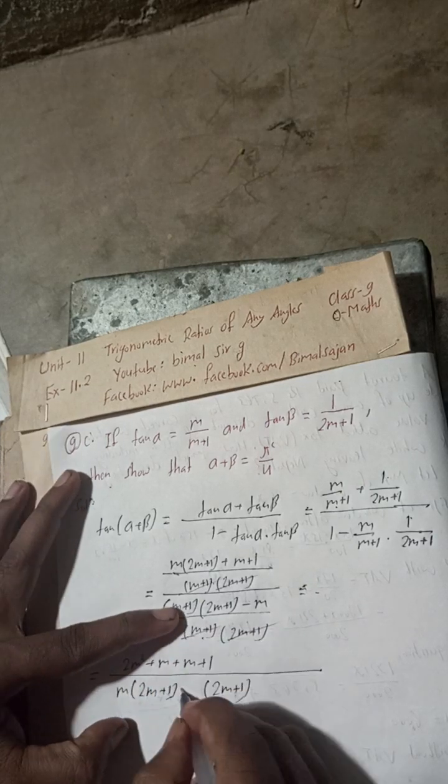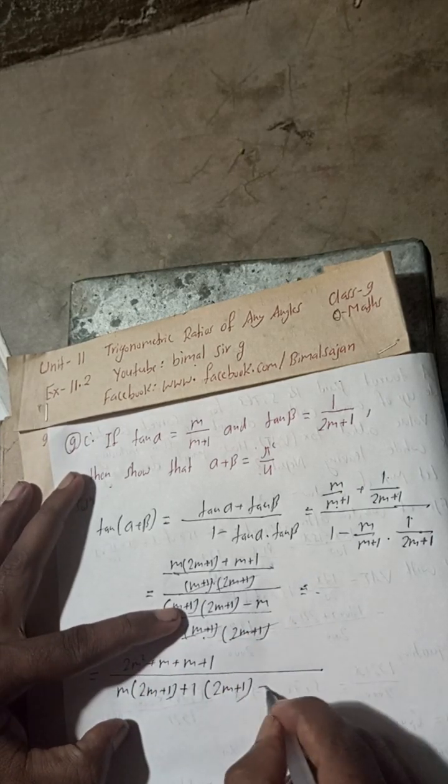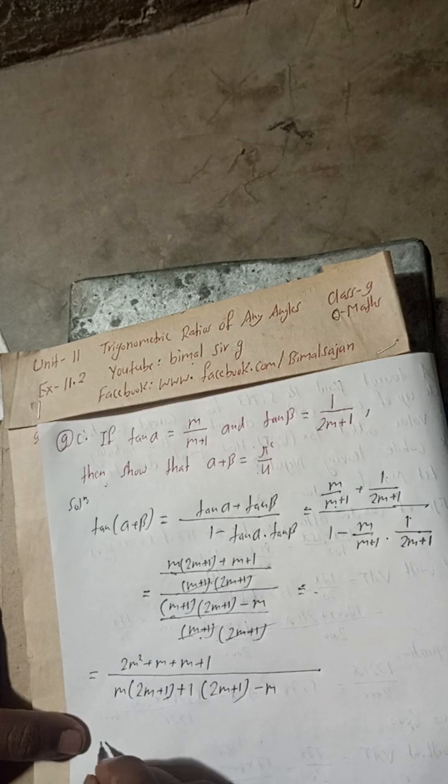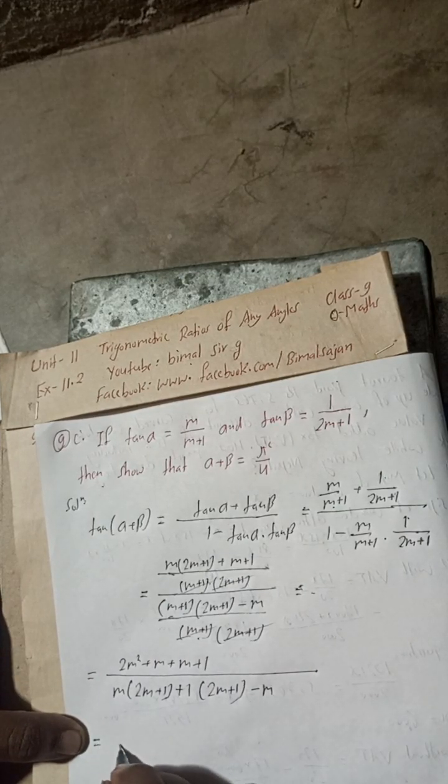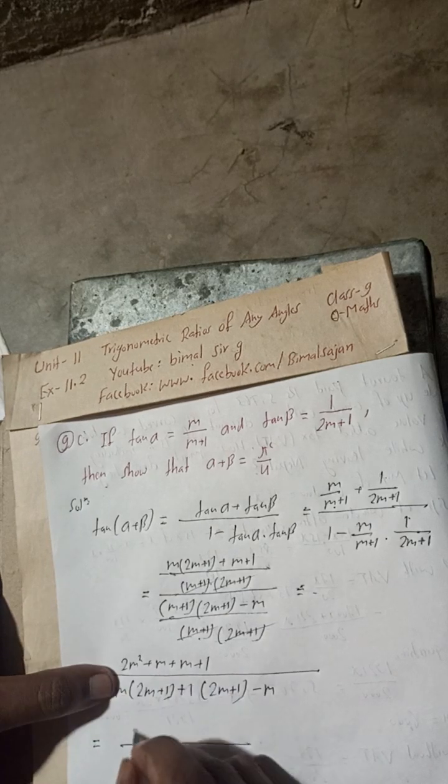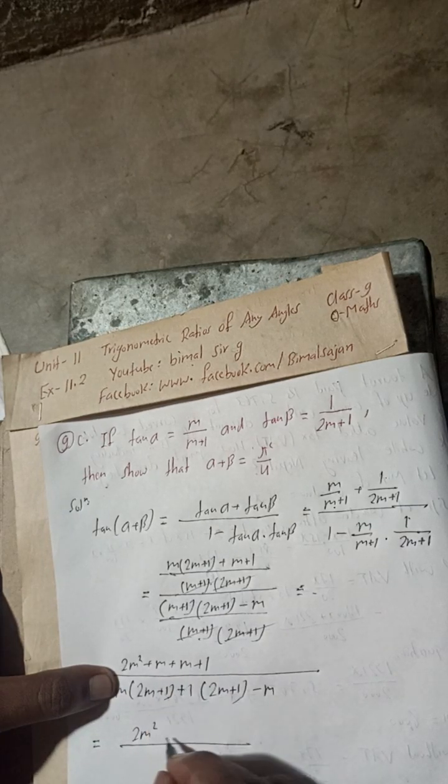Now you can write 2m² + m + m will be 2m plus 1. Here 2m × m is 2m² plus m, and × 1 multiply means this is the same 2m + 1.